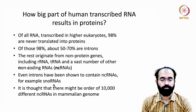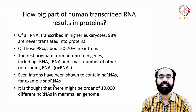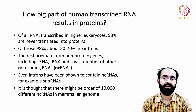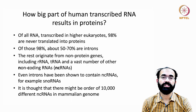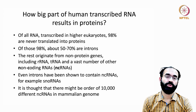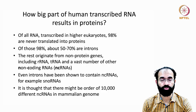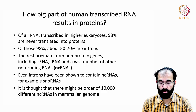It is thought that there might be on the order of 10,000 different non-coding RNAs in a typical mammalian genome. That is a huge number, considering we know only around 23,000 protein coding genes. And 10,000 doesn't mean there are only that many — it can be even more.